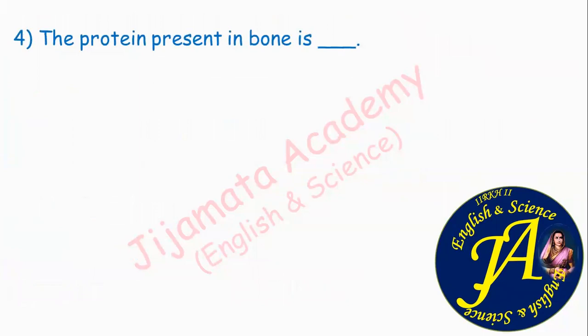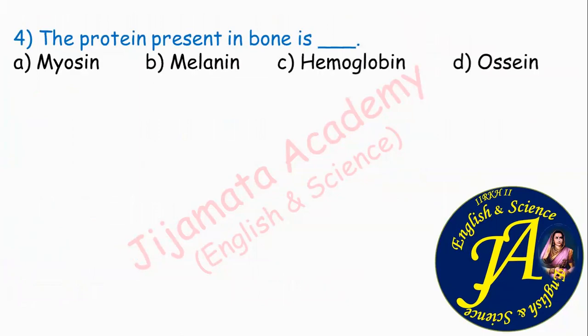Next question: the protein present in bones is — myosin, melanin, hemoglobin, or osin. Myosin is present in muscles, melanin is present in our skin giving us black color, hemoglobin is present in our blood, and osin is the only correct option, present in our bone. Correct answer is option D: osin.